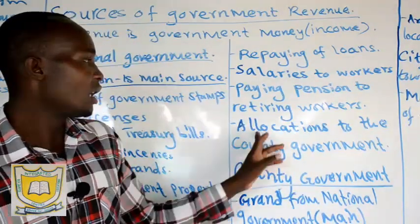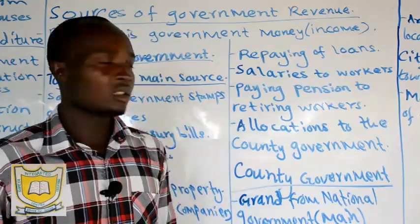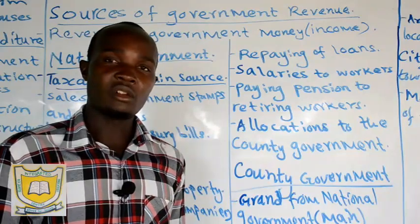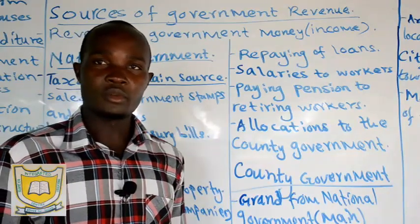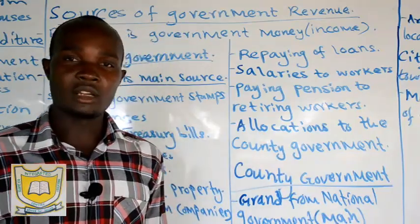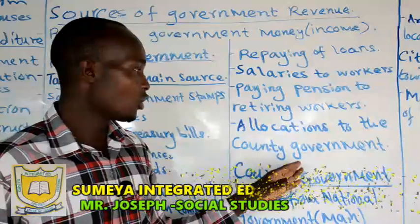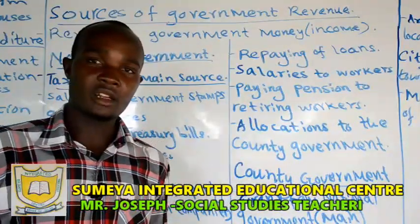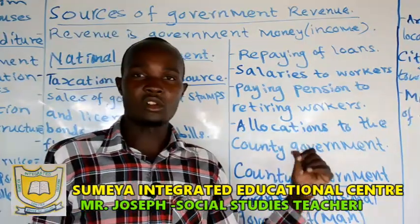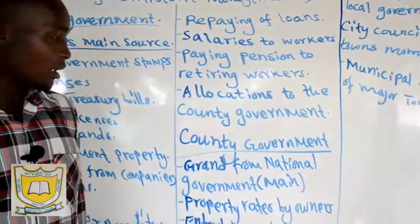Then we have allocation to county governments. We have what we call a financial year. Each year there is a budget approved by the National Assembly, and the money is distributed to the county governments to make sure the county governments can manage and assist the people in different ways. That is what you call allocation or grants to the county government.